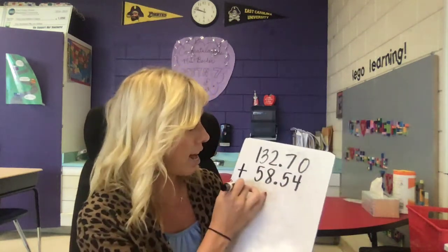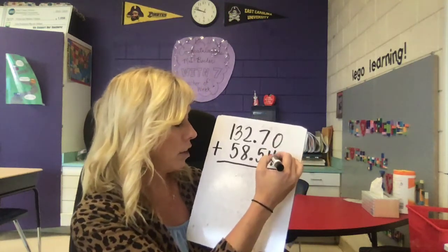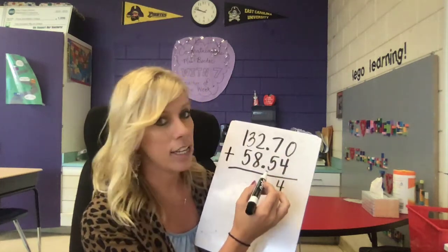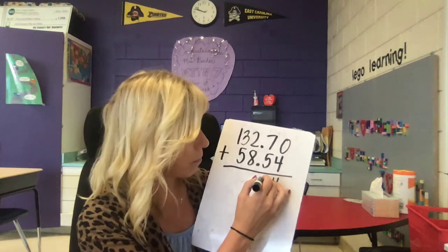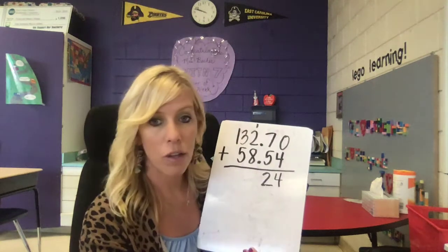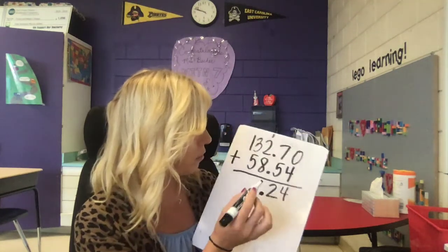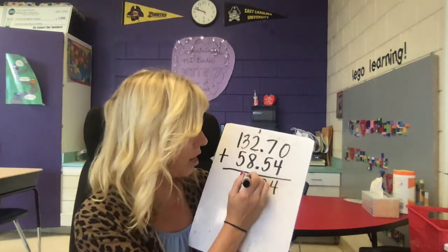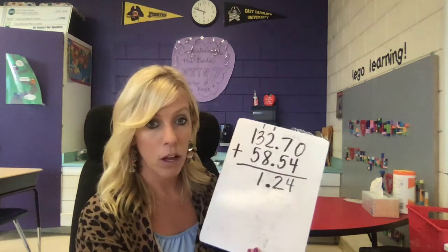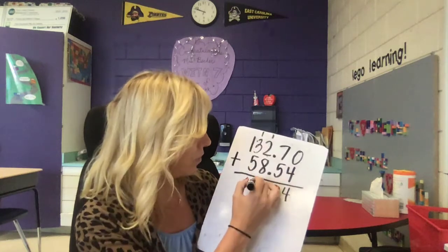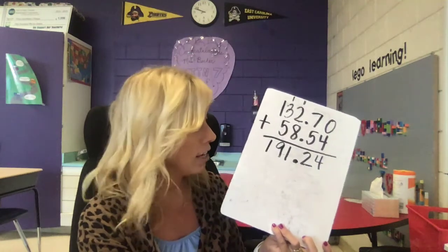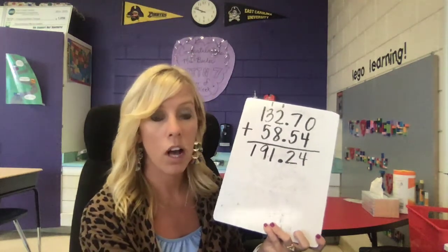So now we can add. Zero and four hundredths is still four hundredths. Seven tenths plus five tenths — we know seven and five is twelve. Ten tenths gives us a whole, so we stick the one over here and only have two tenths left over. Don't forget your decimal. Eight plus three is eleven ones, so we put our one one here and carry the ten to the tens place. In the tens place we get nine. We only have one hundred still. The answer is one hundred ninety-one and twenty-four hundredths.